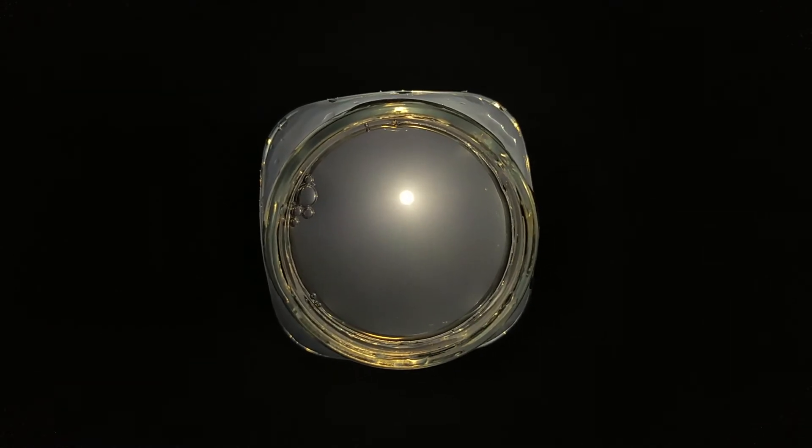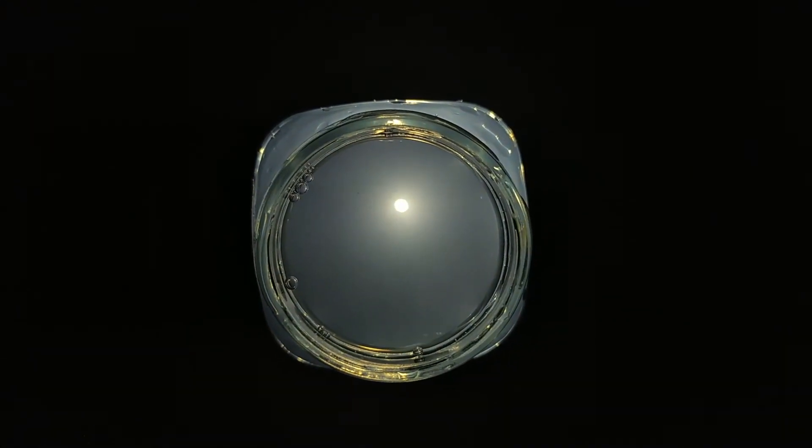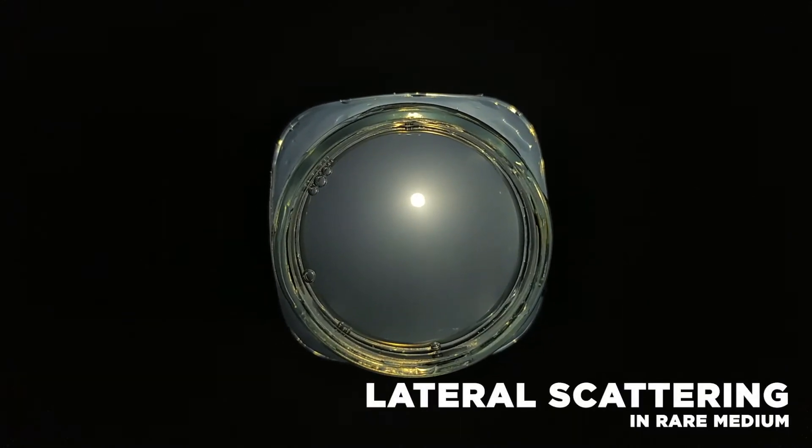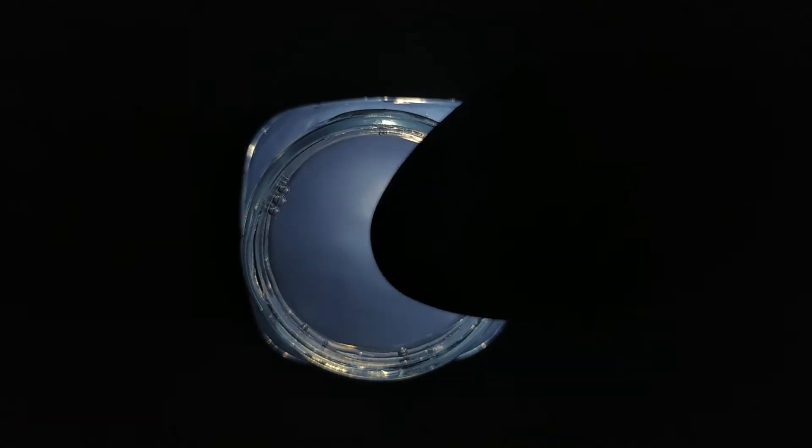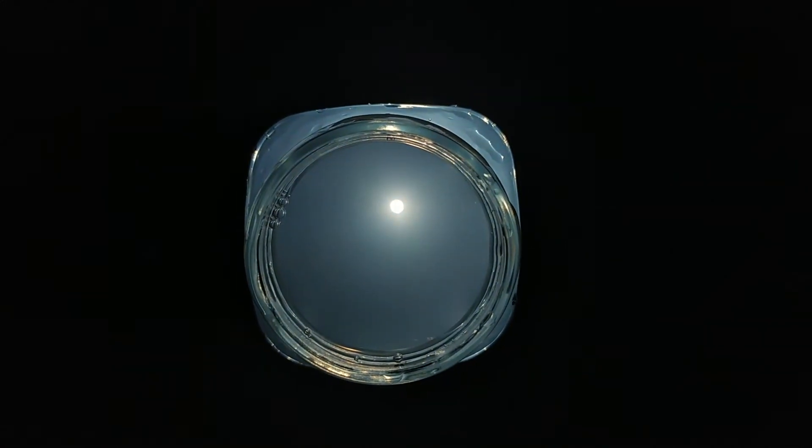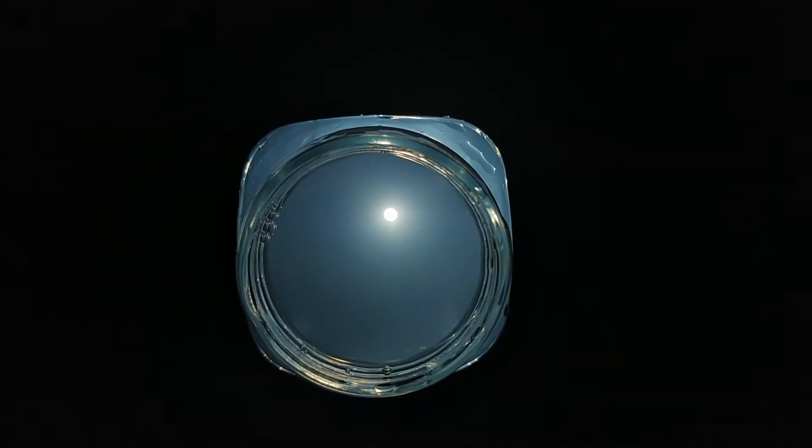Since our medium has few scatterers, these wavelengths are scattered laterally or in all directions in the medium. Because our eyes are not sensitive to ultraviolet light, we only see a blue sky.